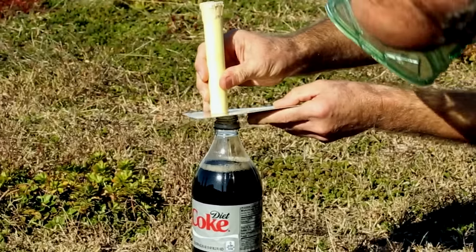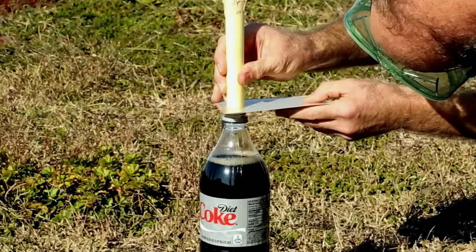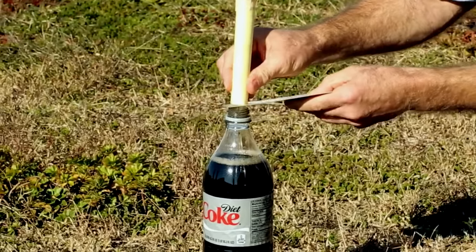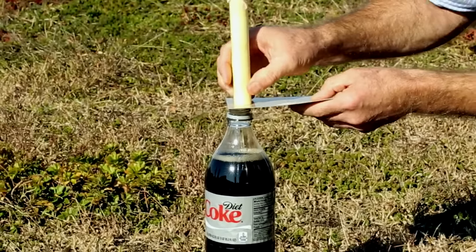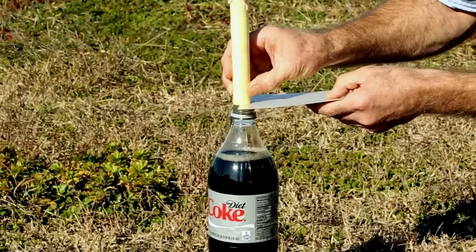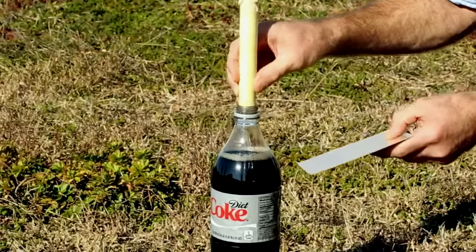Then you put the open end of your tube of Mentos on a card and place the card directly over the opening of the soda bottle. And when you're ready, remove the card, let all the Mentos drop into the soda, and jump out of the way.